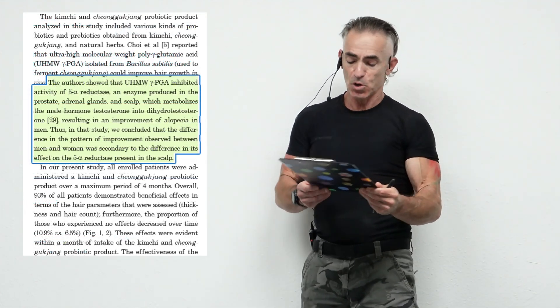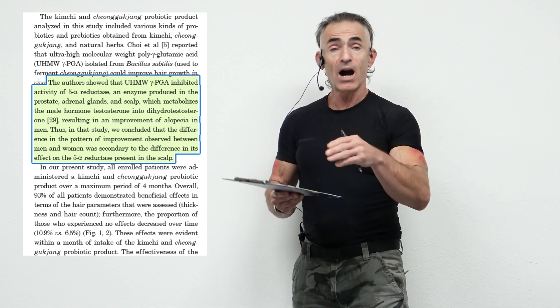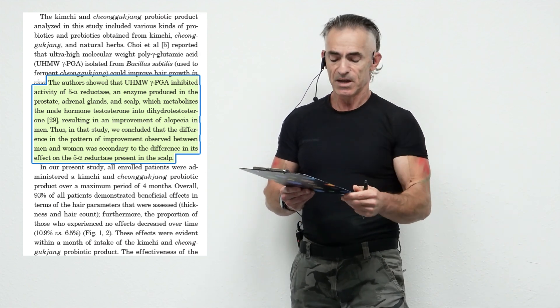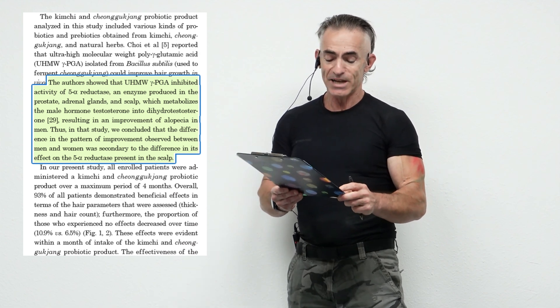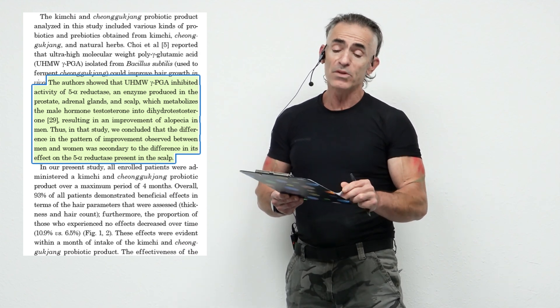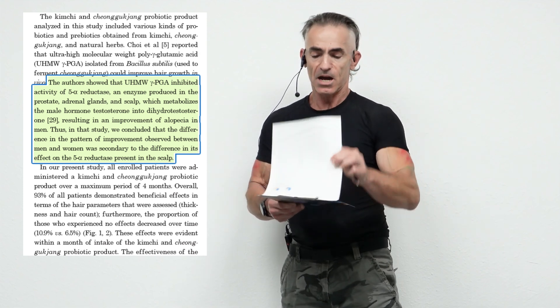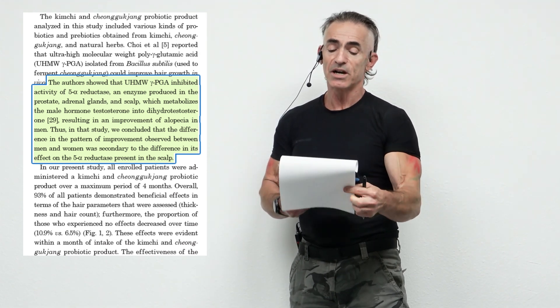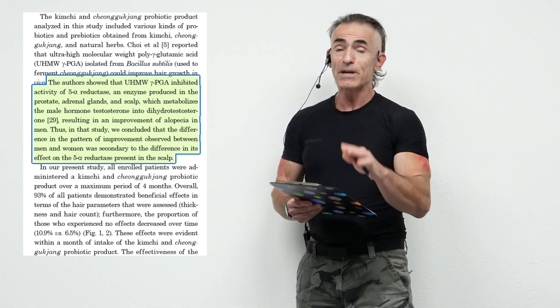The authors showed that it inhibited activity of 5-alpha reductase. Just some of the highlights. An enzyme produced in the prostate, adrenal glands, and scalp, which metabolizes the male hormone. This is probably why a little different results between male and female. Hormone testosterone, dehydrotestosterone, resulting in an improvement of alopecia in men.